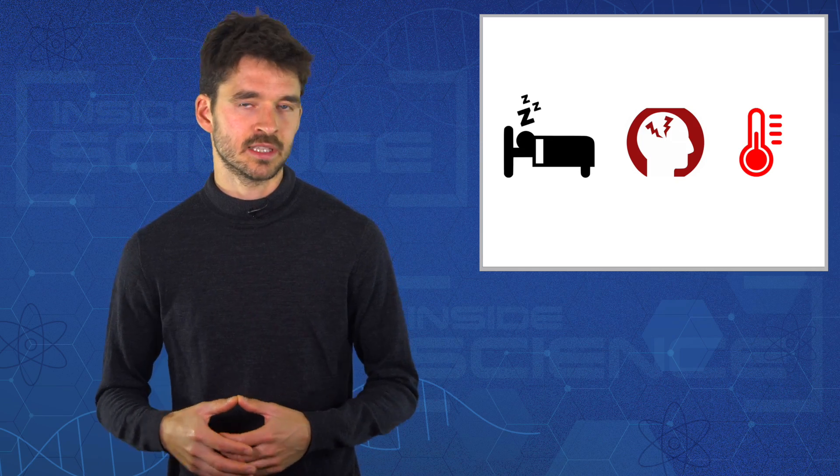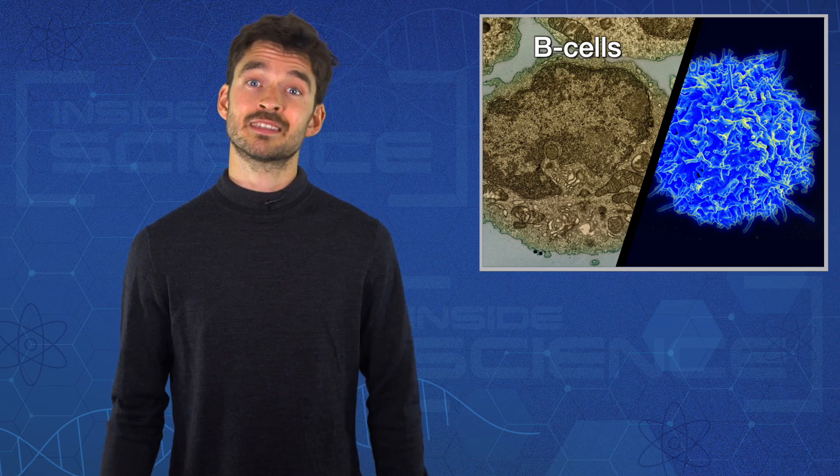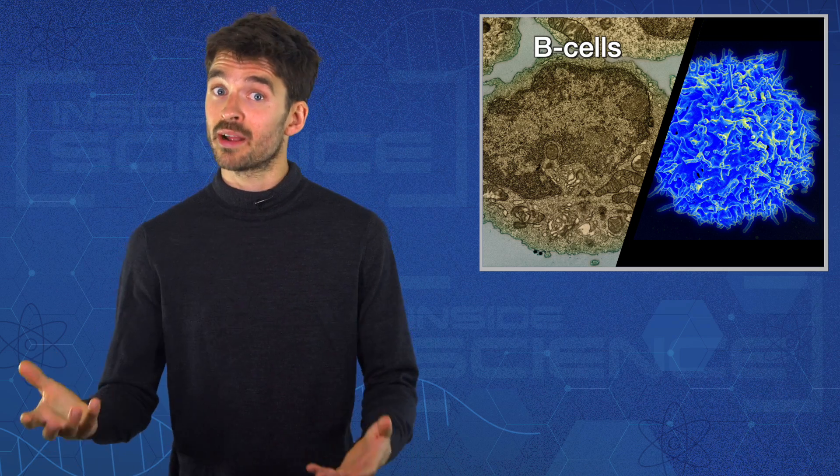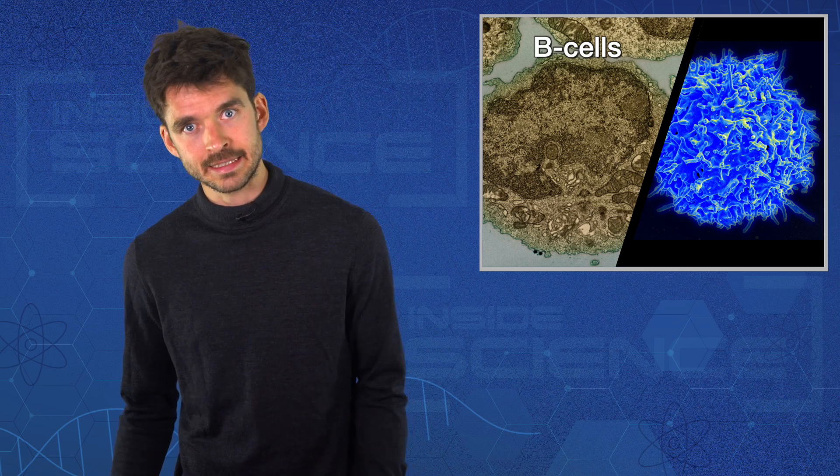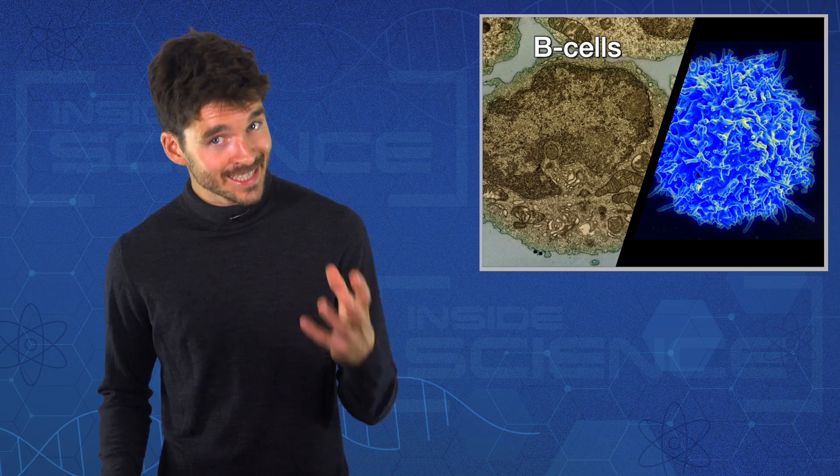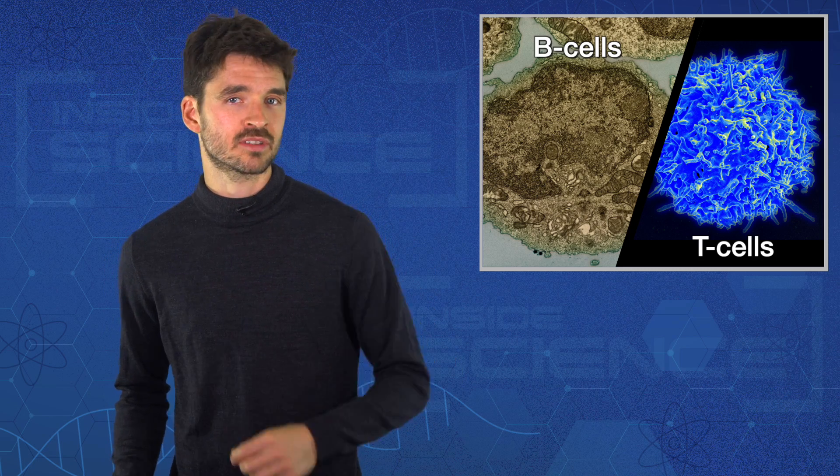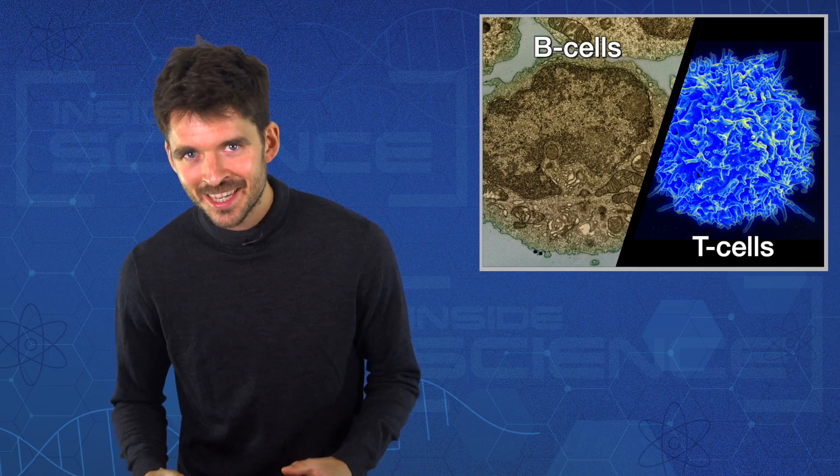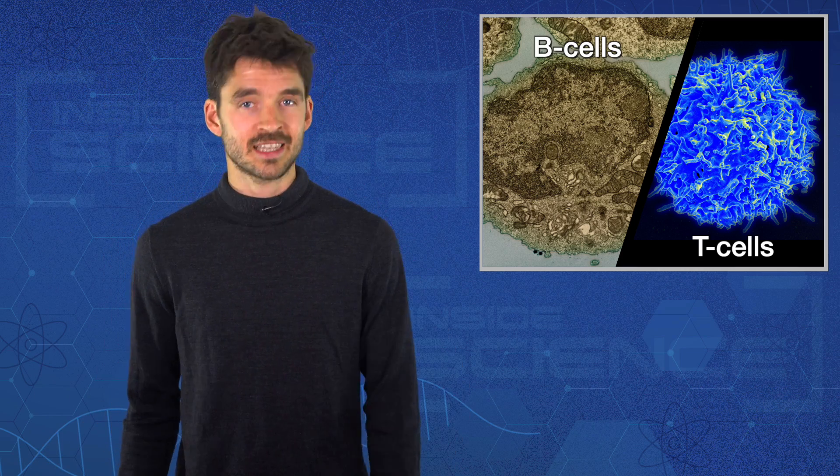So a successful vaccine stimulates two types of cells in the immune system: T cells and B cells. Now B cells produce antibodies against a pathogen like a virus, and both of these vaccines stimulated B cell antibody production up to around similar levels as those of people recovering from the actual disease. The vaccines also stimulated T cells which responded to the spike protein that sits on the outside of the virus. Now this is great news because it seems like a T cell response is also important to successfully fight the disease.